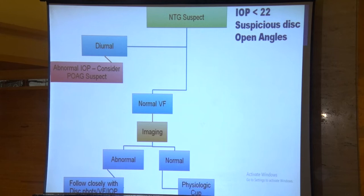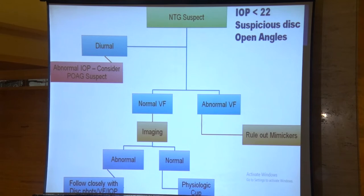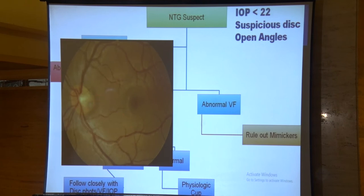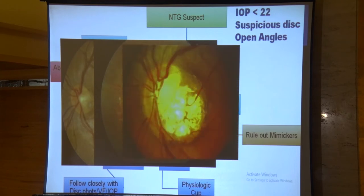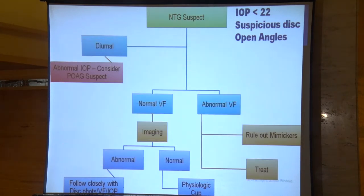If imaging is also normal with a normal visual field, then it is a physiological cup and treatment is not needed. However, if there is still concern, first rule out all mimickers — such as an optic disc pit, morning glory syndrome, or a large coloboma involving the disc — since these can also produce visual field effects. Once all mimickers are excluded and a problem persists, then these normal tension glaucoma patients should be treated.